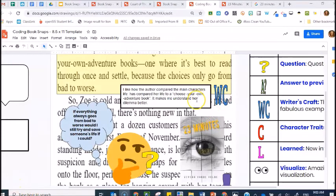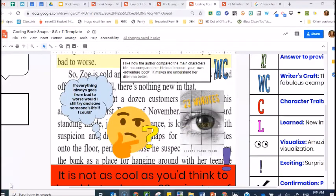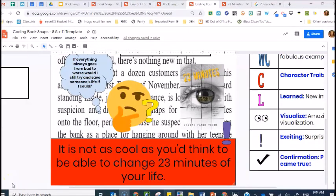For writer's craft, I liked how she used her wording to help me understand the main character's dilemma better. My question was if everything always goes from bad to worse, would I still try and save someone's life if I could? And my final reflection was that it's not as cool as you'd think to be able to change 23 minutes of your life.